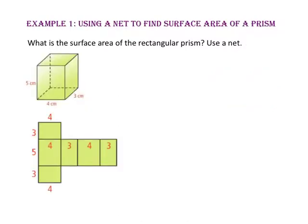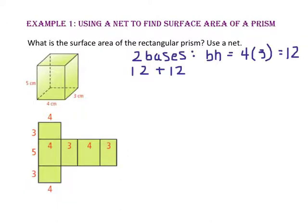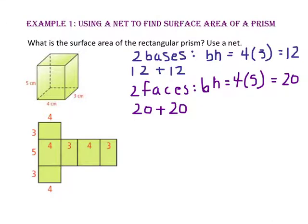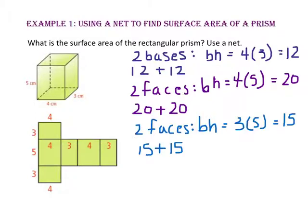Let's begin by finding the area of the bases. Our base has a length of four and a height of three, and there are two of those. Now let's find the area of the larger rectangular lateral faces — both have a length of four and a height of five. Now let's look at the smaller rectangular lateral faces — both have a length of three and a height of five. Now that we have the area of all six faces, let's add them up: 12 plus 12, 20 plus 20, and 15 plus 15.